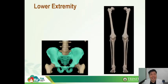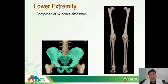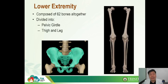The lower extremity is composed of 62 bones altogether, and is divided into the pelvic girdle or the hip bone, the thigh and the leg, and of course the ankle and the foot.